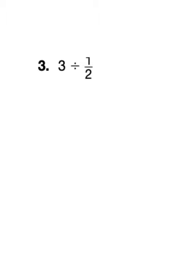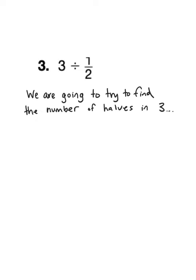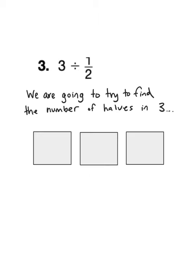Okay, 3 divided by 1/2. Another way to think about this is we're going to try to find the number of halves in three wholes. So if I drew a model to represent my three wholes, let's see, there's my shapes. Here's one whole, two wholes, and three wholes, and I cut each one in half. Okay, now let me count: 1, 2, 3, 4, 5, 6. There are six halves in three wholes.